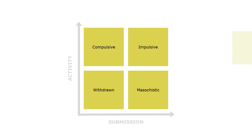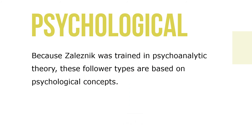Based on the two axes, the model identifies four types of followers. Because Zaleznik was trained in psychoanalytical theory, these follower types are based on psychological concepts.